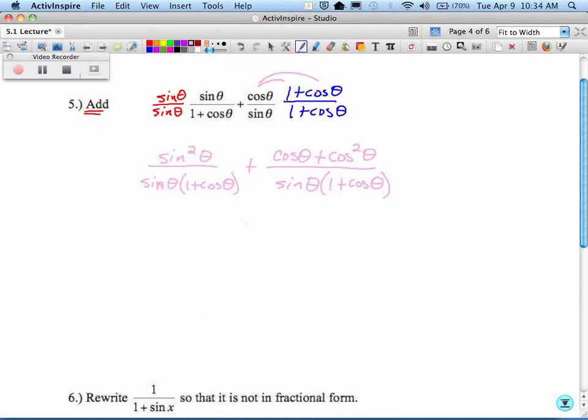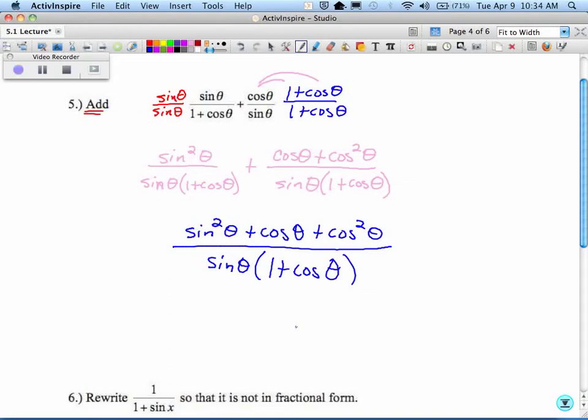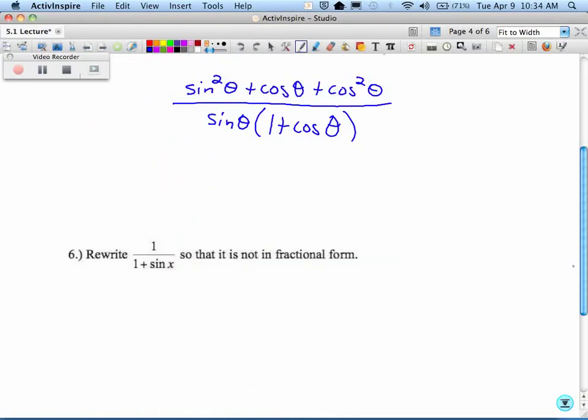So we can add things together. So you end up getting sine squared of theta plus cosine of theta plus cosine squared of theta all over sine of theta times 1 plus cosine of theta. We are not done. So take a look at it. All I did is common denominator. That's the denominator in the answer. Add this stuff in the numerator. There weren't any like terms. What do you guys know? What do you guys know about that? Sine squared plus cosine squared is 1.